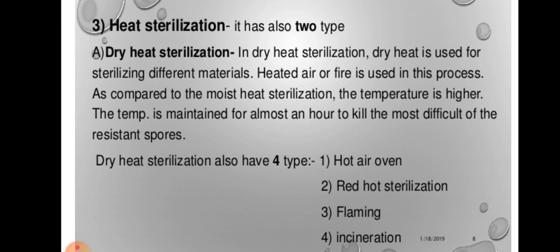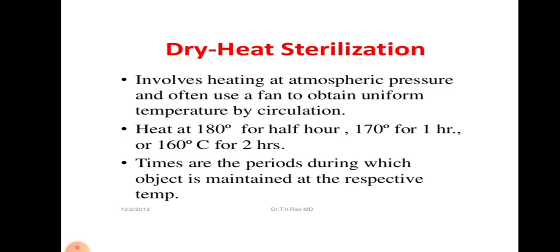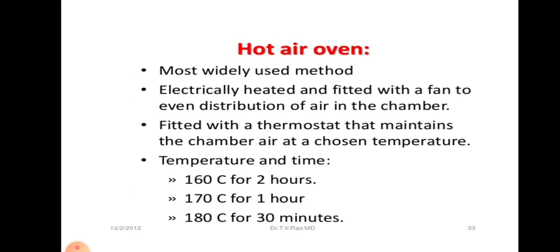The temperature is maintained for almost an hour to kill the most resistant spores. Dry heat sterilization has four types. Dry heat can be applied by four mechanisms: using hot air oven, red hot sterilization, direct flame and incineration. Dry heat sterilization involves heating at atmospheric pressure and often uses a fan to obtain uniform temperature by circulation. Heating at 180 degrees centigrade for half an hour, 170 degrees for one hour, 160 degrees centigrade for two hours. Hot air oven is the most widely used method, electrically heated and fitted with a fan for even distribution of air in the chamber.